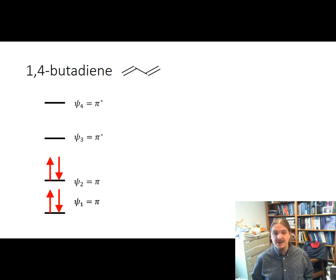1,4-butadiene has four carbon atoms, four p orbitals, four molecular orbitals, at least in the pi case. And yeah, I'm not talking about the sigma bond orbitals right now. Each carbon atom brings an electron to the system, so there are four electrons, and they go into the two bonding orbitals. And here are what those orbitals look like.